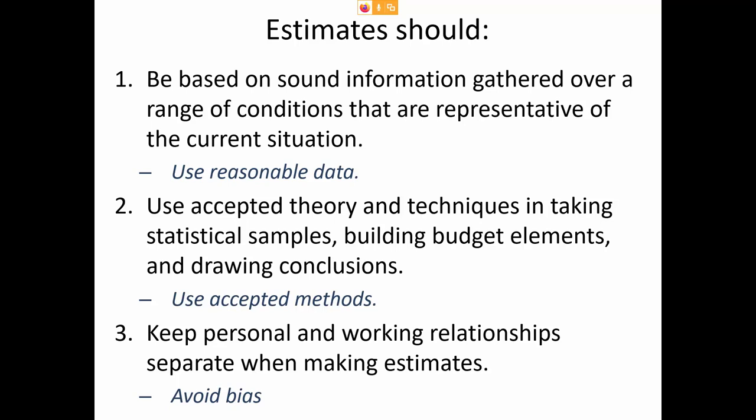The book introduces some rules on how we should estimate things in the future. One point is that you should use reasonable data — data based on a range of conditions that represents what you're actually doing. For example, if you were going to build a warehouse in Alaska, you wouldn't use building expenses from Los Angeles, because materials cost more in Alaska due to transportation differences, and insulation and other building requirements are different there. You need to select data that's representative of the location you'll be working in.